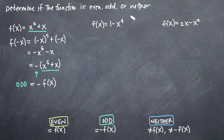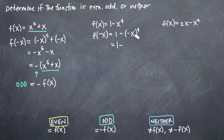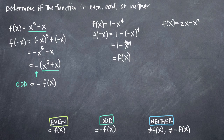We'll go ahead and do the same thing with our second function. As always, we'll plug in negative x in place of x and we'll get one minus negative x to the fourth. When we simplify this, that negative sign inside the parentheses will go away and we'll just be left with x to the fourth, giving us one minus x to the fourth. As you can see, we're right back where we started at f of x, so this just becomes f of x, which means it's an even function.